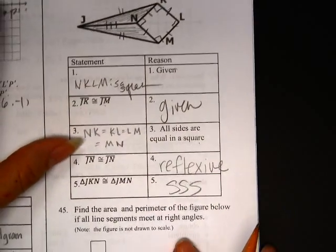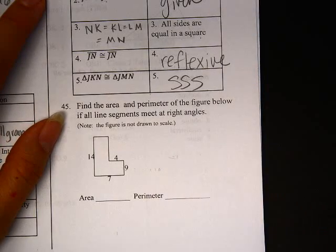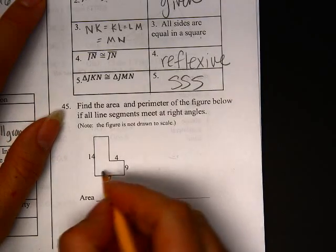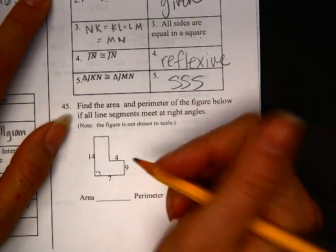So, oh man, that's a fine one. Alright. So, 45. Find the area and perimeter of the figures below if all the line segments meet at right angles. Right angle, right angle, right angle. So, we're just finding the area and perimeter.